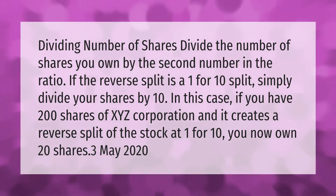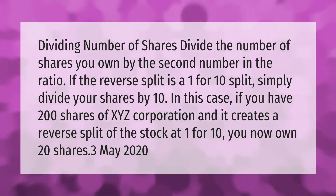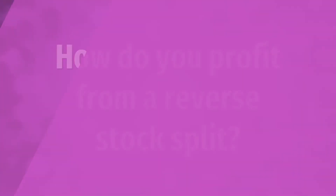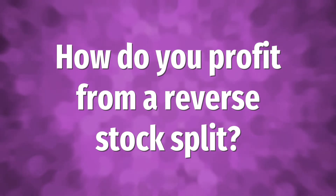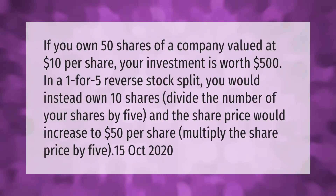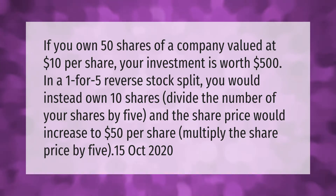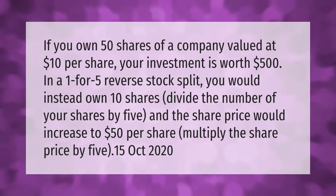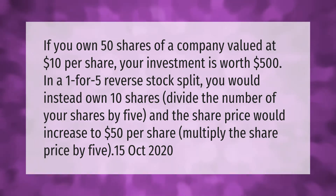If you own 50 shares of a company valued at $10 per share, your investment is worth $500. In a 1-for-5 reverse stock split, you would instead own 10 shares — divide the number of your shares by 5 — and the share price would increase to $50 per share.